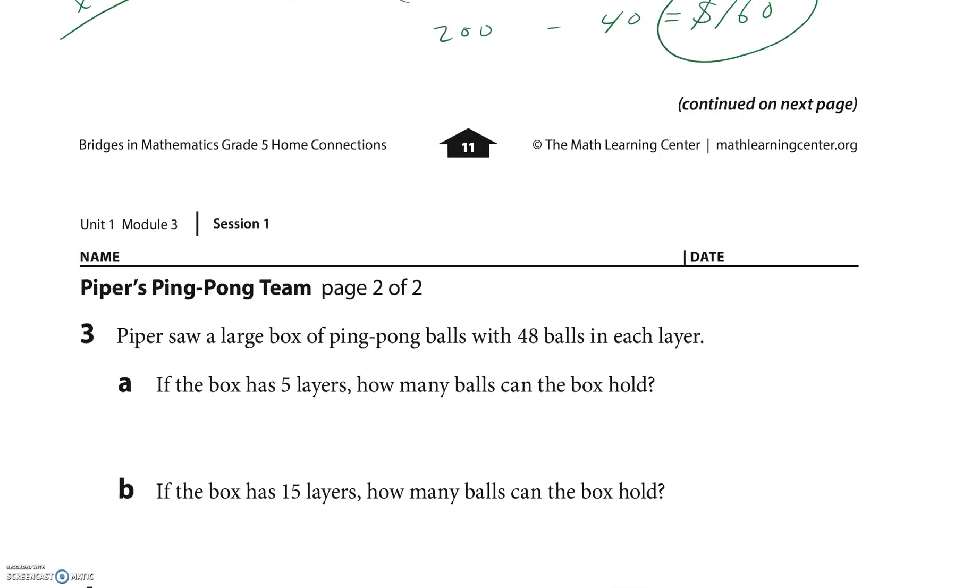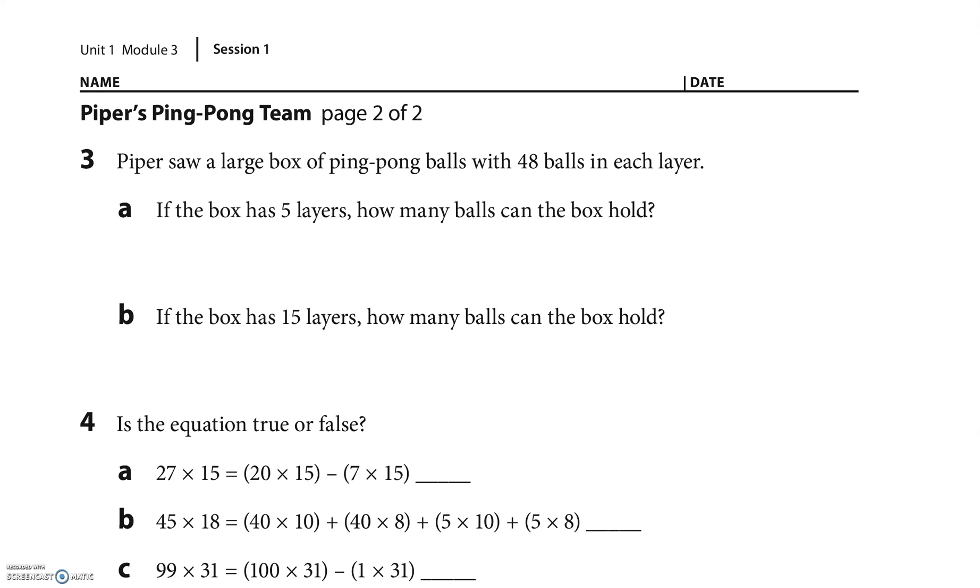Number three: Piper saw a large box of ping-pong balls with 48 balls in each layer. I don't know the dimensions of that bottom layer but there's 48 in there. If the box has five layers, how many balls would it hold? And then the next one's 15. So you have the bottom, 48, and it's five high. We don't know the dimensions of the base, but it doesn't matter. So instead of three numbers, the base is the first two numbers multiplied together already.